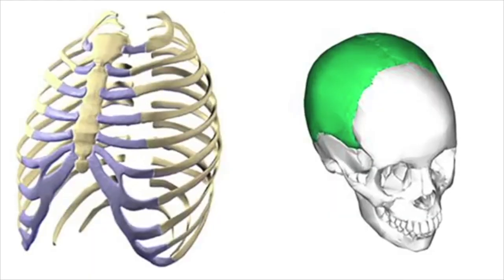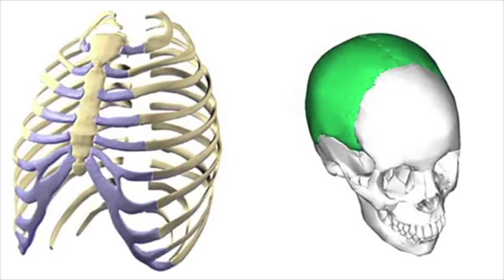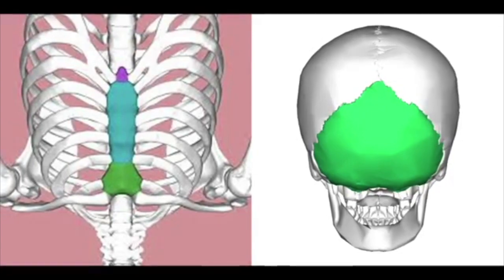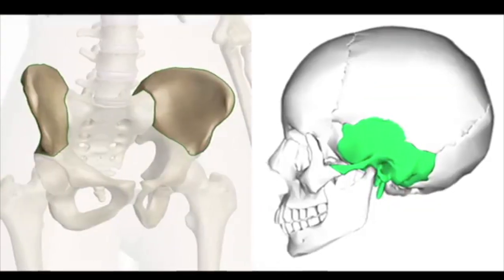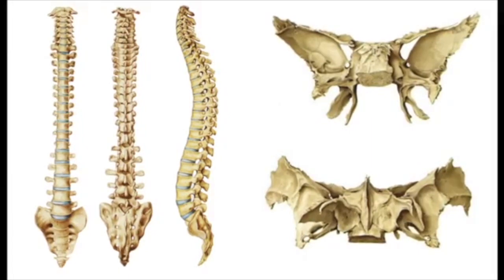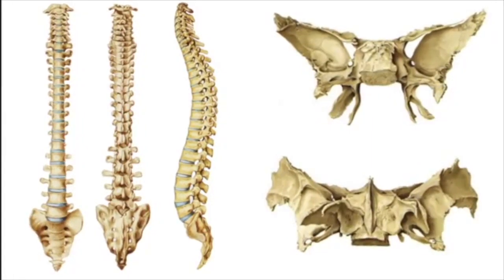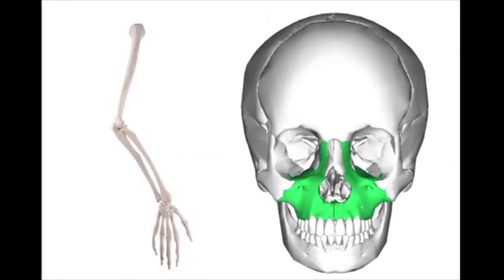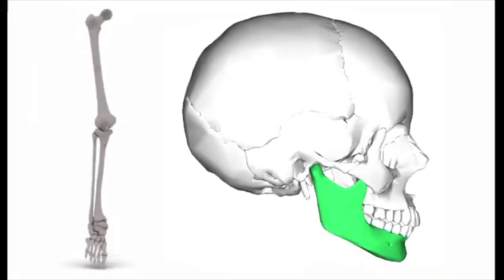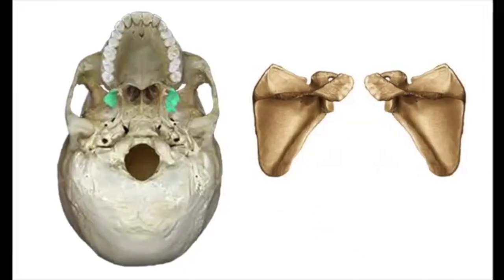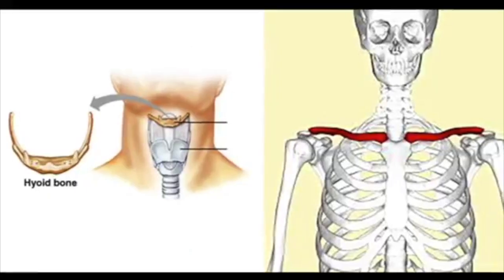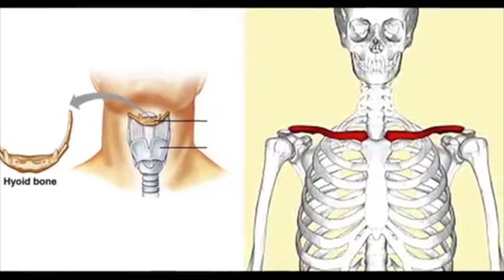Following this order, the ribs would be a counterpart of the parietal bones, the sternum and manubrium would be a counterpart of the occipital bone, the temporal bones would correspond to the ilium, the sphenoid would be a merge of several structures like the vertebral column and the sacrum bone, the superior extremities would correspond to the maxilla, the inferior extremities would correspond to the mandible, the pterygoid plates would be a counterpart of the scapula, and the hyoid bone would probably be a counterpart of the clavicle.